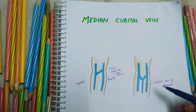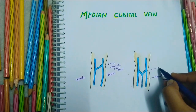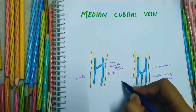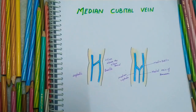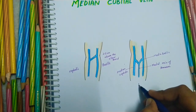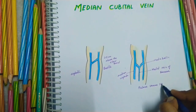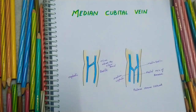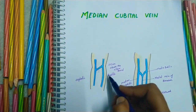Sometimes the upper end of the median vein of the forearm bifurcates into two and forms the median basilic and the median cephalic. In this condition, the median cubital vein is absent. The median vein of the forearm starts from the palmar venous network and ends at the elbow, draining into one of three veins: either the median cubital vein, the cephalic, or the basilic. It has two patterns — the H-shaped and the M-shaped.